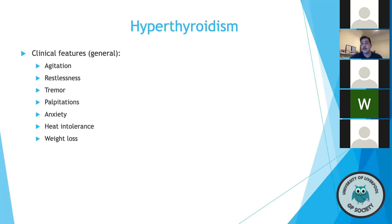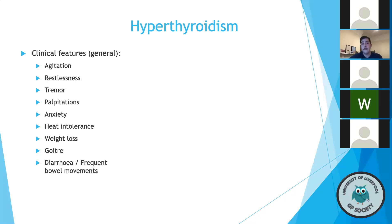Weight loss is a predictable feature: if a patient's metabolic rate is increasing, their energy demand goes up; on the same diet, they have less energy left over for fat deposition and therefore burn through their reserves. A goiter may or may not be present depending on the cause. Diarrhea and frequent bowel movements occur because the GI tract, with increased energy, moves food through at a faster rate — shortened transit time leading to diarrhea. Similarly, menstrual changes range from oligomenorrhea all the way to amenorrhea.